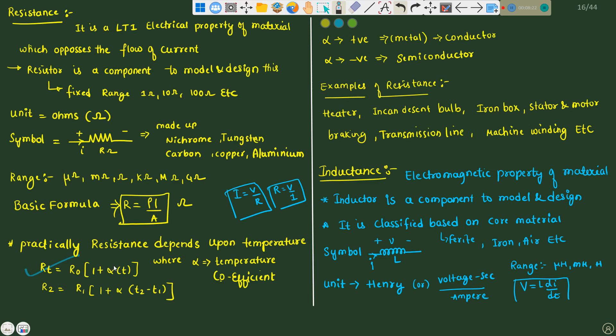RT equals to R0 into 1 plus alpha T, and R2 equals to R1 into 1 plus alpha T2 minus T1, where alpha is temperature coefficient. If alpha is positive, it acts like a metal, that is conductor. If alpha is negative, it acts like a semiconductor. Examples of resistor in our practical applications: heater, incandescent valve, iron box, stator or motor braking system, transmission line, machine winding.